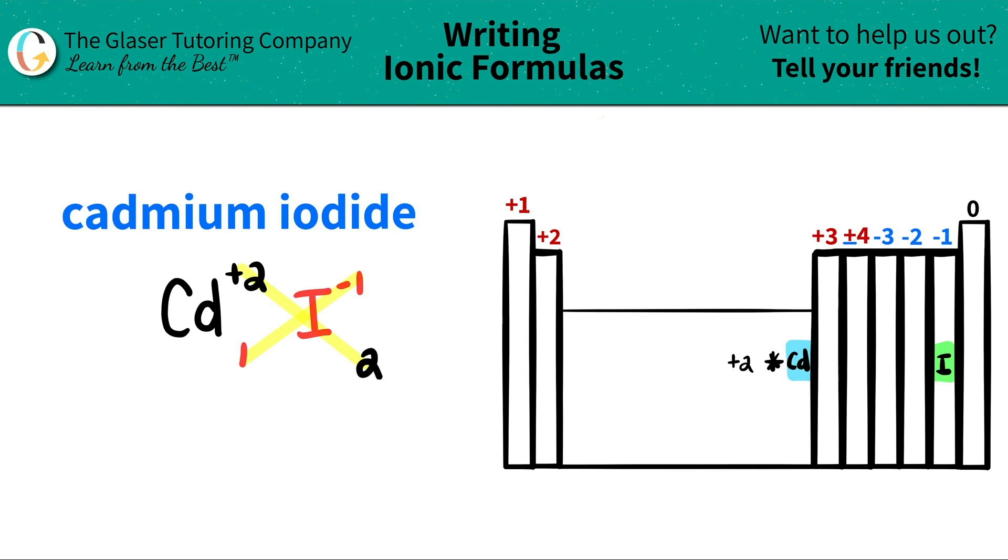So now you're just basically rewriting what you have. You have Cd cadmium. I only need one of them, so don't worry about that. And then I have iodine. But in this case, I have two of them. So I have to write that two there. And there you go. Cadmium iodide is CdI2.